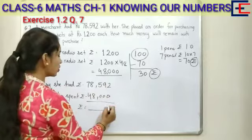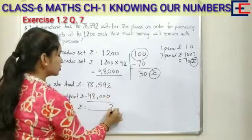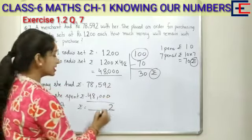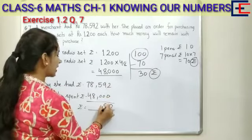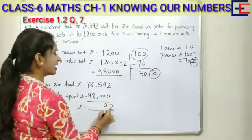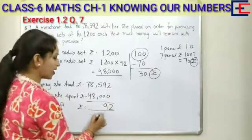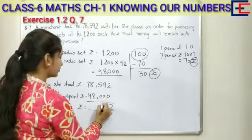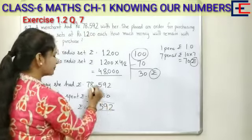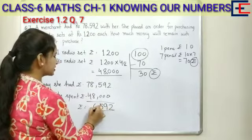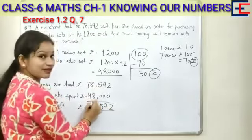Let's do the subtraction. Working through the digits: 2, then 9, then 5, then 8, then 7. We subtract digit by digit.